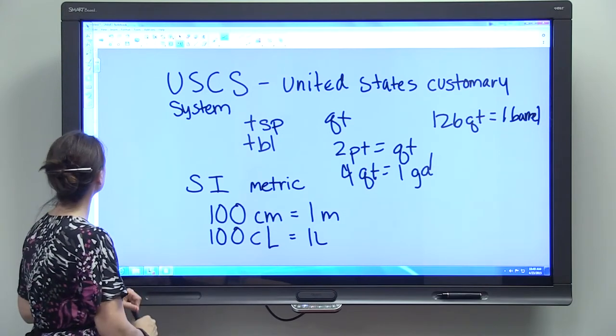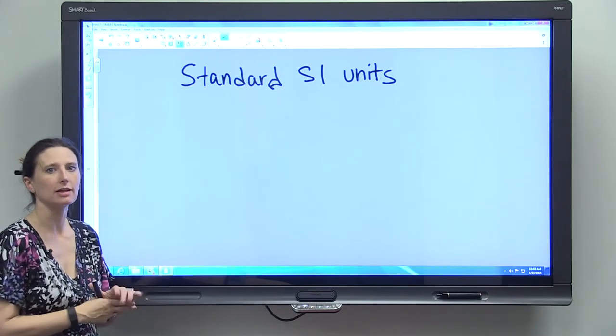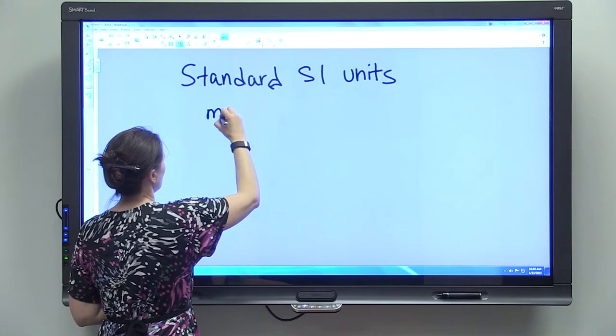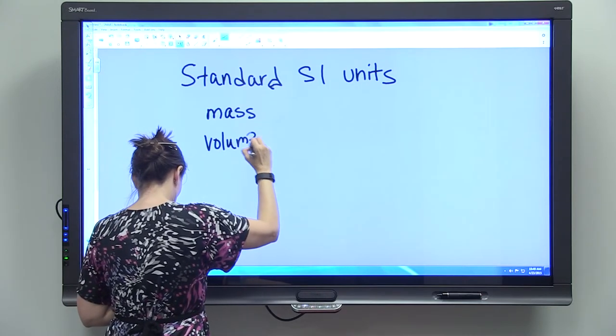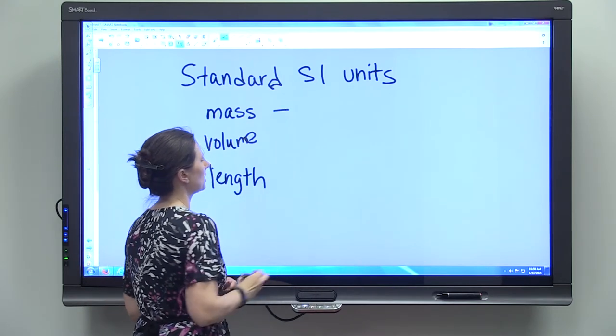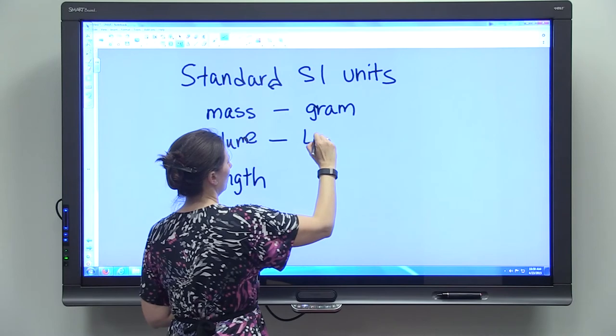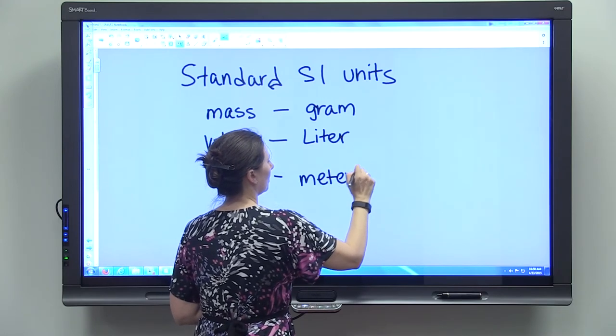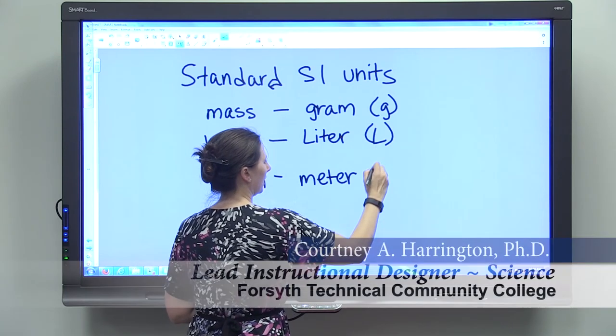There are standard SI units, and the standard SI units that you're going to need to know mainly for this class and this lab are the units for mass, the units for volume, and the units for length. So the standard measurement for mass is the gram, the standard for volume is the liter, and the standard for length is the meter. Grams are abbreviated with a lowercase g, liters abbreviated with a capital L, and meter is abbreviated with a lowercase m.